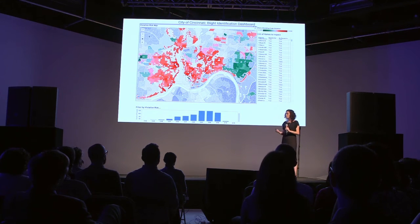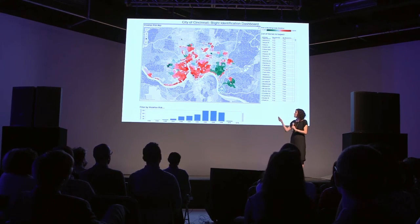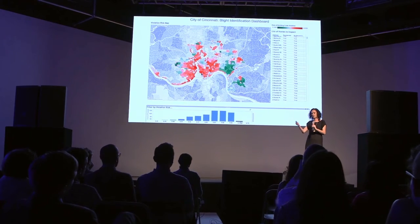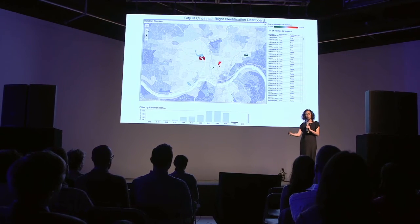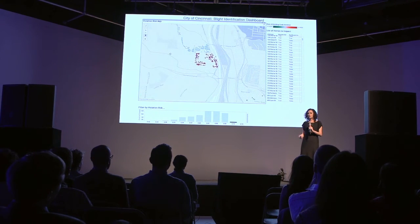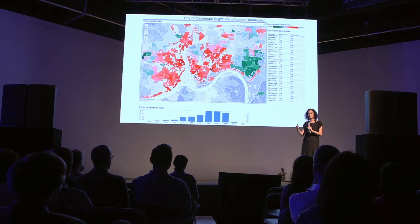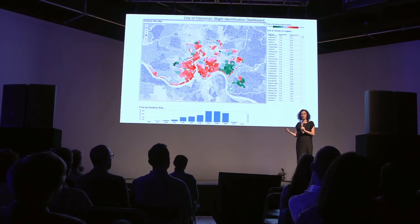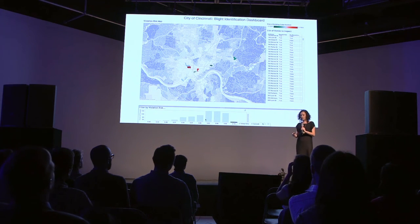To implement this in daily inspection workflows, we're delivering our partner a dashboard showing the risk map and a prioritized list of buildings ranked by their risk of having a building violation. We're also working to improve our model by flagging LLCs and corporations that have come into Cincinnati, buying homes and not bringing them up to code — this will allow the city to catch these owners early before the situation of blight gets worse.